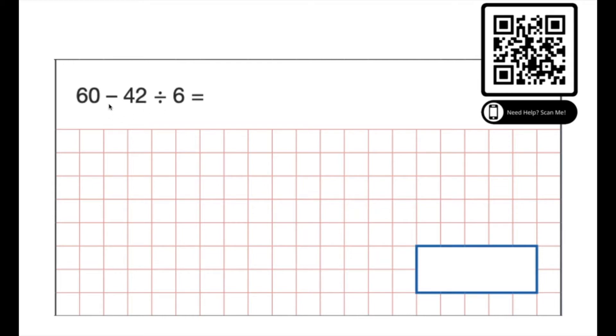Okay next one we have a division and a subtraction, so you should know the division goes first. 42 divided by 6 is 7, so I'll just put that there to remember. 60 subtract our answer to this which was 7. 60 take away 7 is 53.